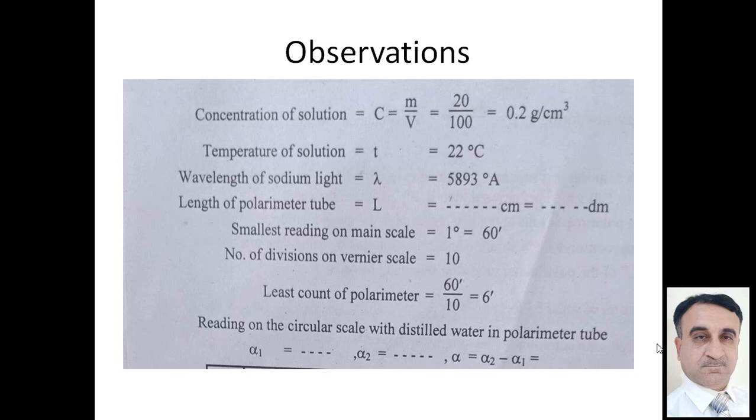Reading on the circular scale with distilled water in a polarimeter tube, these are alpha 1 and alpha 2 on both sides. From here we can find alpha is equal to alpha 2 minus alpha 1.